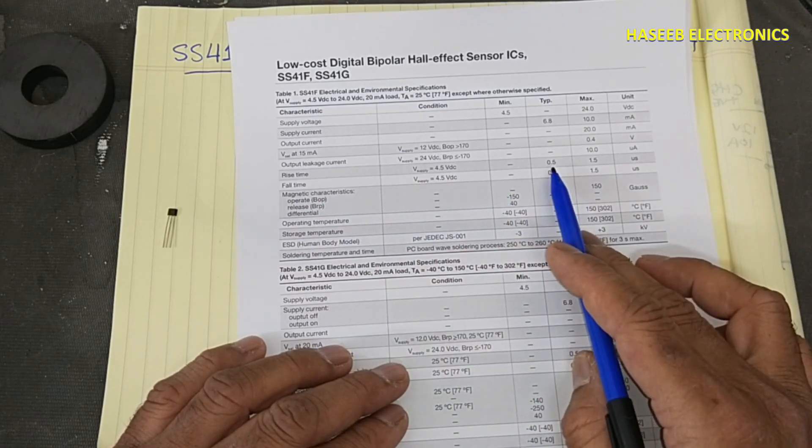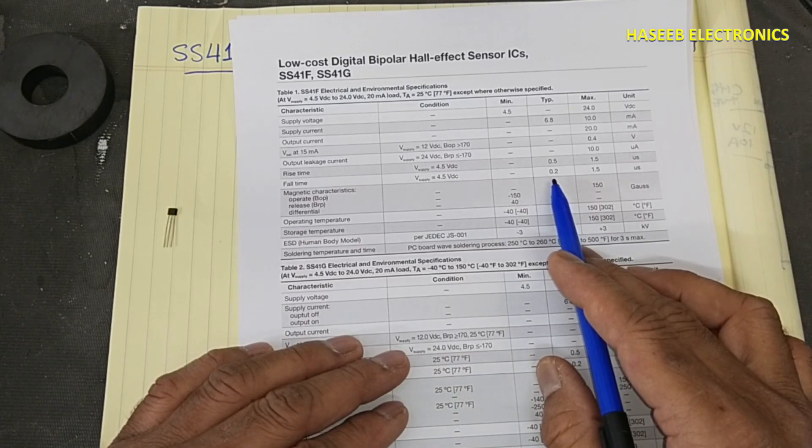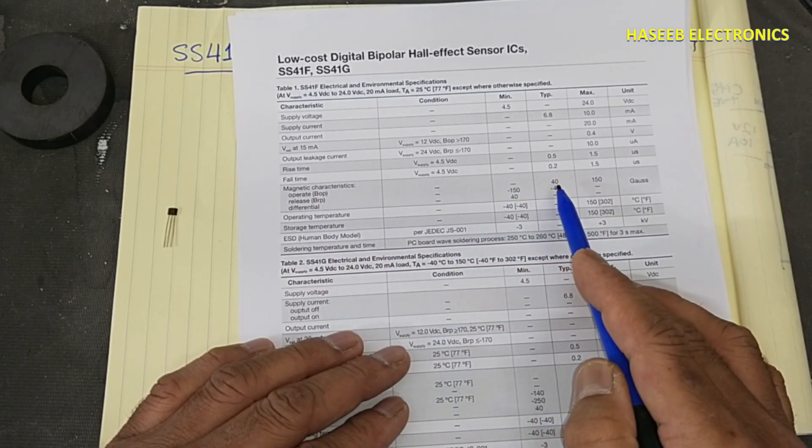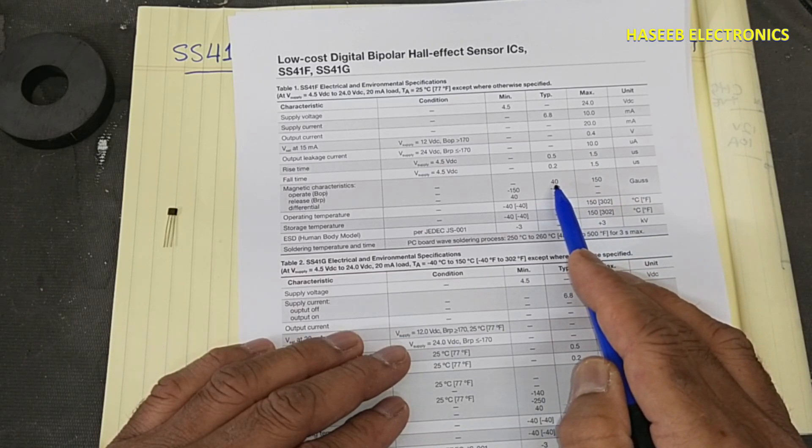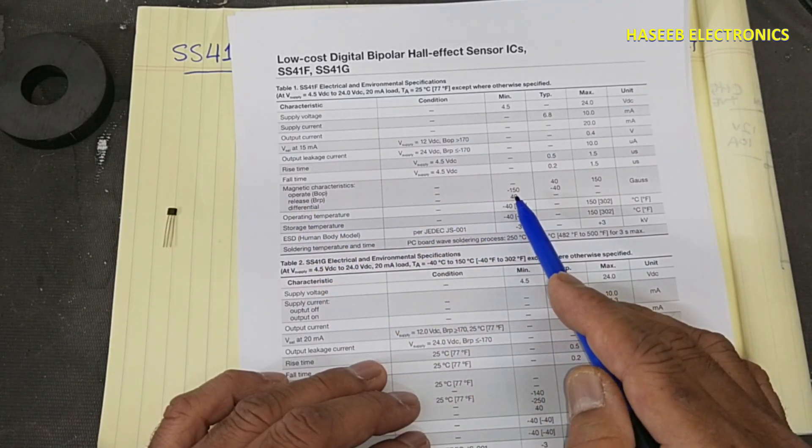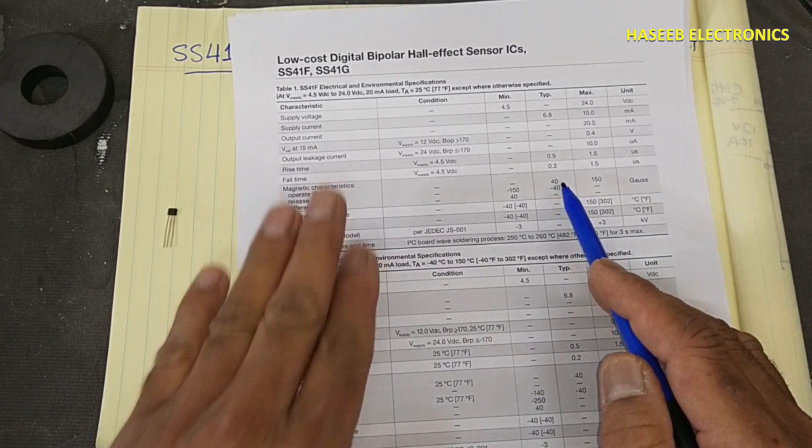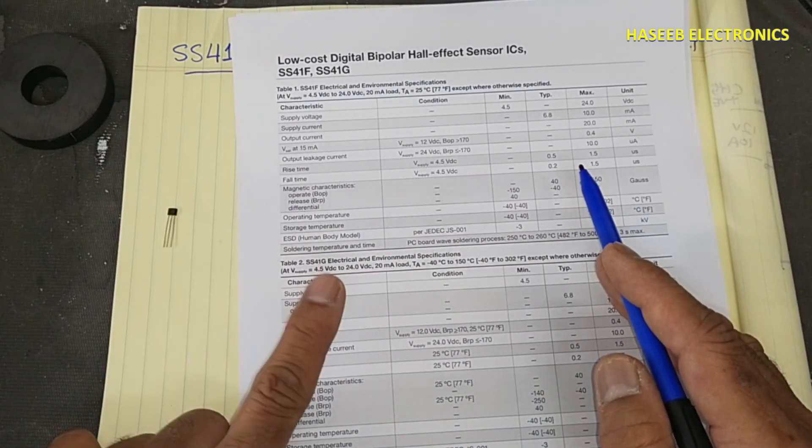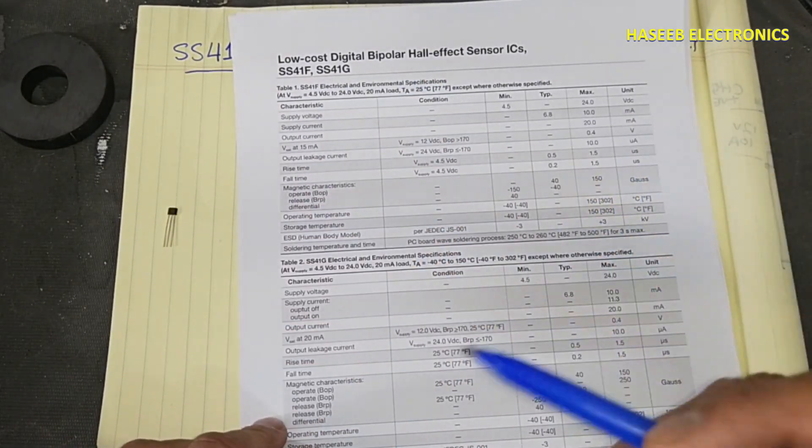Rise time is 0.5 to 1.5 microseconds, fall time is 0.2 to 1.5 microseconds. The magnetic flux release range is minus 150 to minus 40, representing north and south poles. This is a digital sensor. Some sensors have analog outputs—those are linear sensors—but this is a digital sensor. In upcoming videos we will see linear sensors as well.